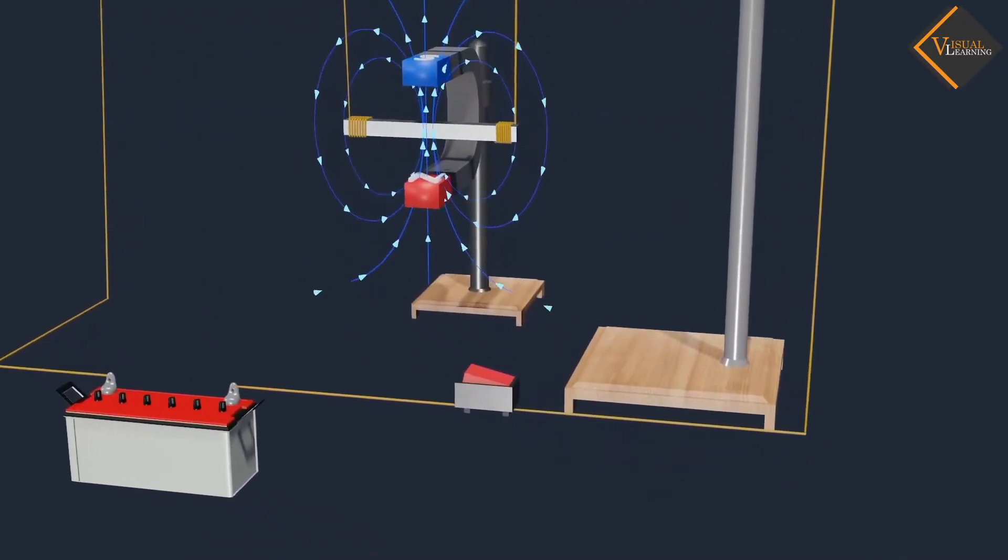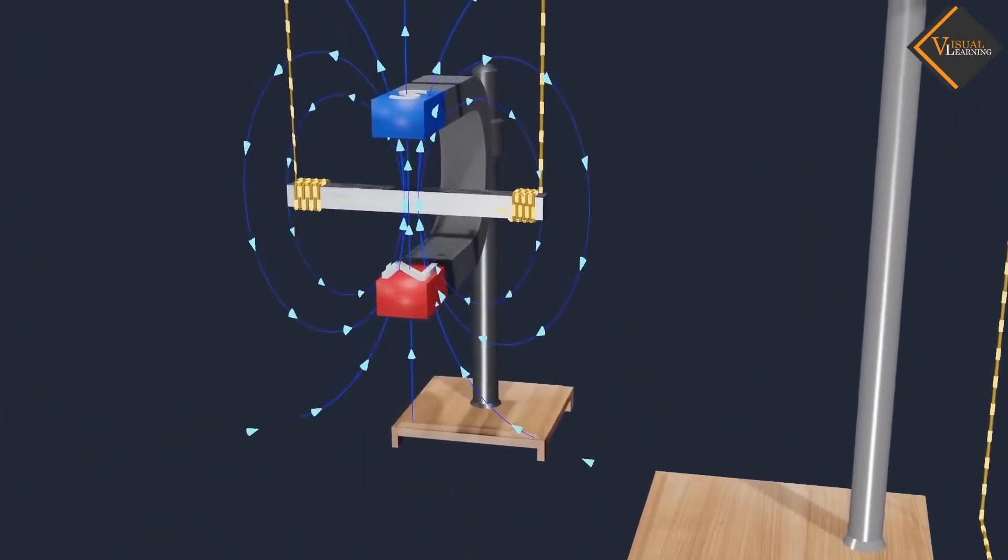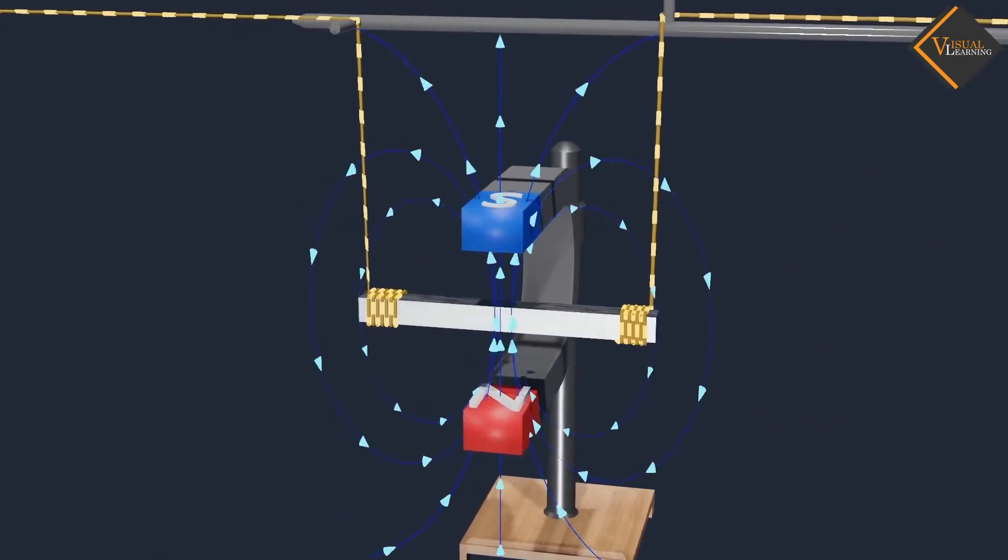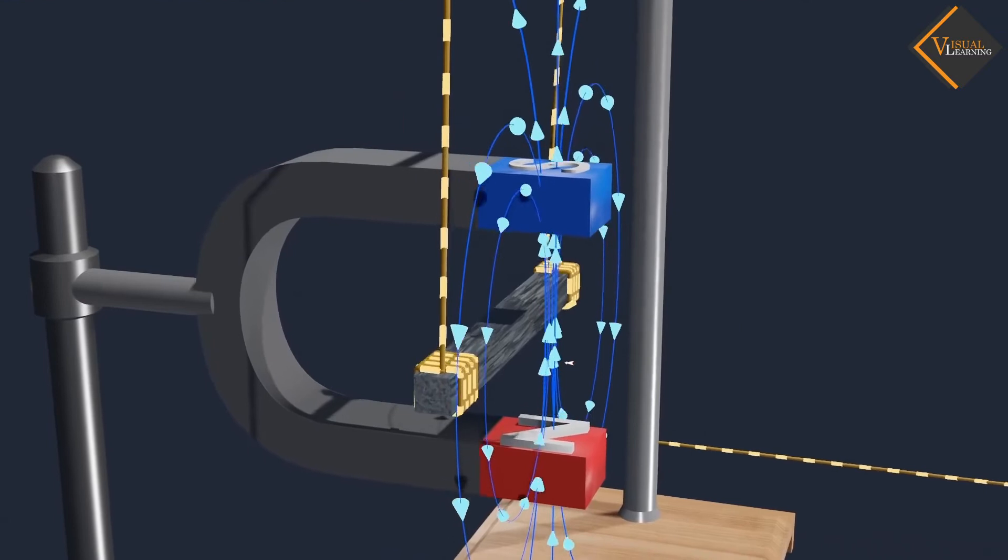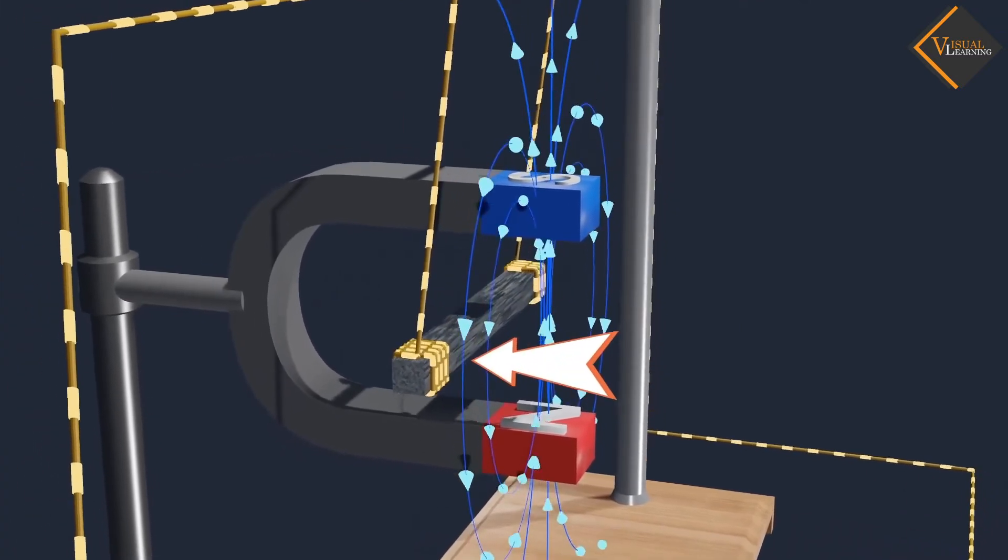Now, when we pass a current through the aluminium rod from end B to end A, we observe that the rod is displaced towards the left.